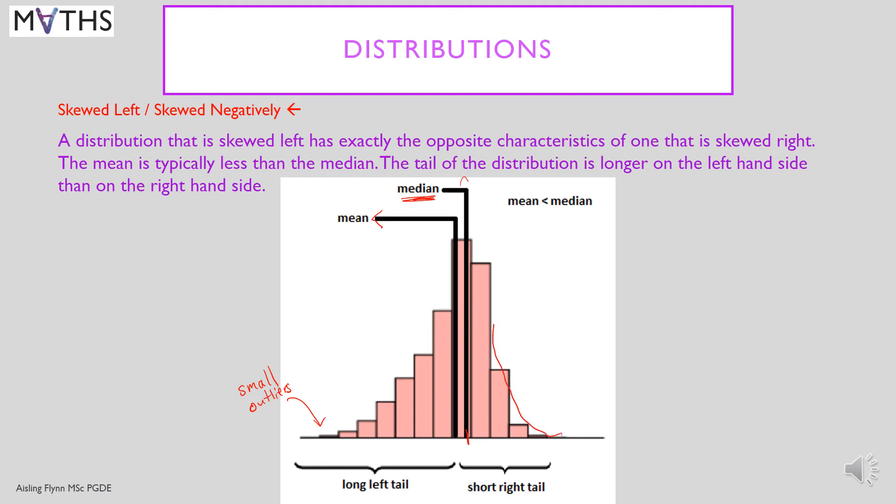Now the shape of the distribution is where most of the values are here near the peak. Then it is stretched out to the left. So this is left or opposite to before, the negatively skewed distribution. So the word skewed means it's pushed to one side or pulled to one side. Here we've got skewed left or skewed negatively. A distribution that is skewed left has exactly the opposite characteristics to one that is skewed right. It means the mean is typically less than the median. The tail of the distribution is longer on the left hand side than on the right hand side. So it's going to have more very small values.